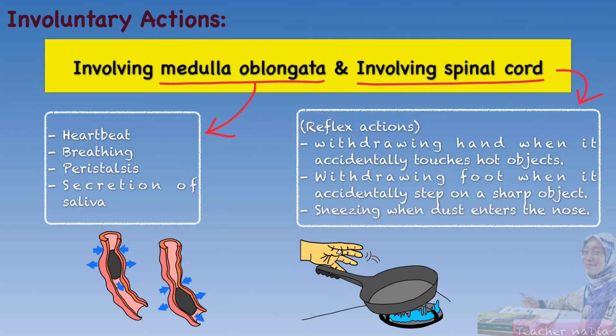Examples of involuntary actions which involve the medulla oblongata include heartbeat, breathing, peristalsis, and secretion of saliva. Involuntary actions involving the spinal cord are also known as reflex actions. Examples include withdrawing a hand when it accidentally touches a hot object, drawing the foot when it accidentally steps on a sharp object, and sneezing when dust enters the nose.